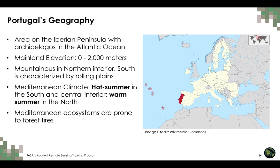Portugal is located on the Iberian Peninsula bordering the North Atlantic Ocean, west of Spain, and includes the archipelagos of Madeira and the Azores. At 92,000 square kilometers, the country is slightly smaller than the US state of Virginia. Elevation on the mainland ranges from sea level to 2,000 meters, with a mountainous northern interior and rolling plains in the south. Portugal has a Mediterranean climate, with hot summers in the south and central interior and warm summers at higher northern elevations. Eucalyptus, cork oak, and maritime pine together make up 71% of the total forested area of continental Portugal.